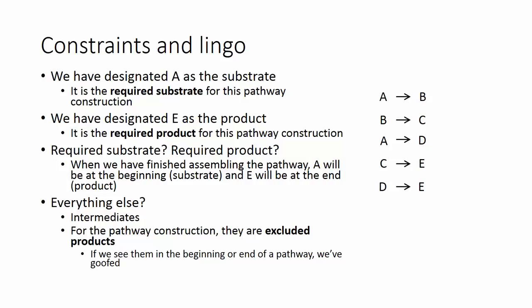We have A as our substrate. It is what we would call the required substrate for this pathway construction. So our pathway map at the end of all this better have A at the beginning. And then we have designated E as the product. That is our required product for this pathway construction. So again, our pathway map at the end better have E.